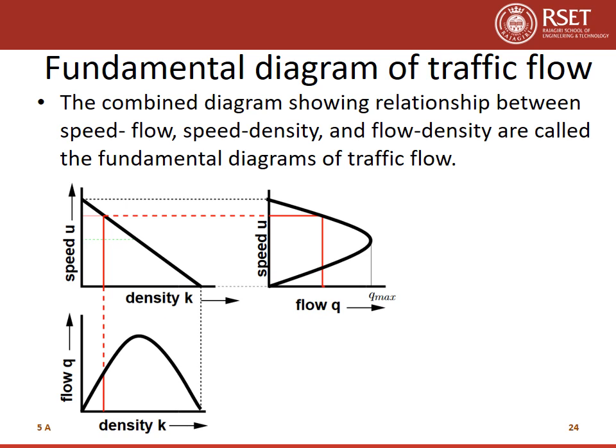In this presentation, we have gone through three graphs: all three curves connecting speed-flow, speed-density and flow-density. These three graphs are combined together and known as the fundamental diagram of traffic flow — the combined diagram showing relationships between speed-flow, speed-density and flow-density. In the previous slide, we showed K and V values corresponding to Q_max. Similarly, K and V values for any Q value other than Q_max can also be shown as indicated by the red line in the figure.